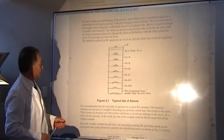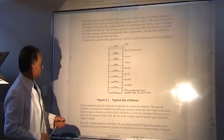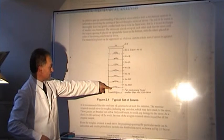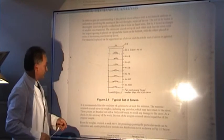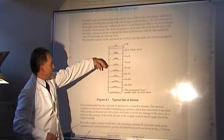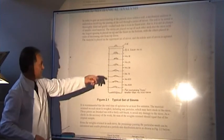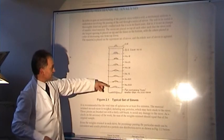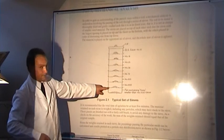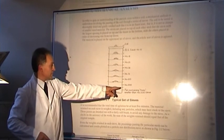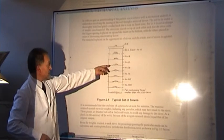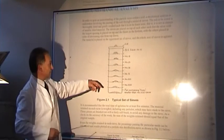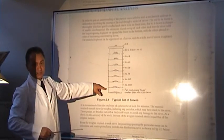Here we can see a graphical representation of a typical set of sieves with the pan at the bottom, the number 200 sieve (equivalent to 75 microns) at the bottom, progressively getting larger. From the British standard sieves, the sieve numbers get larger as the aperture gets smaller — a number 200 sieve has a smaller aperture than a number 25, 18, or 10 sieve.